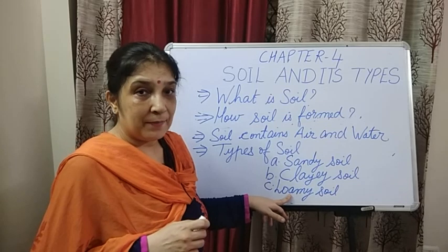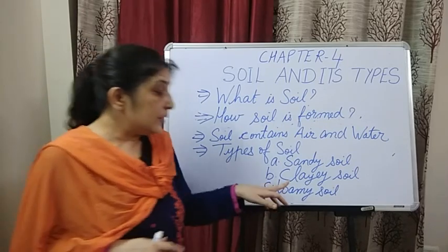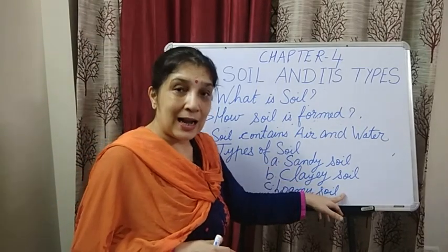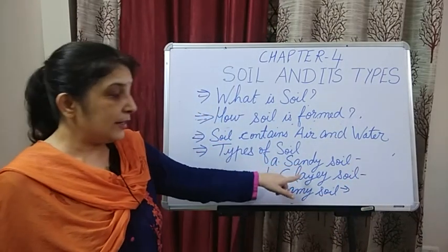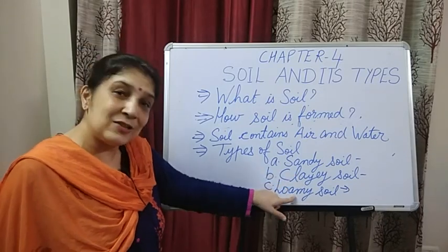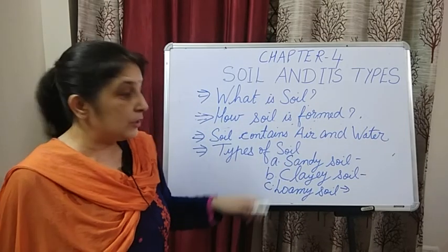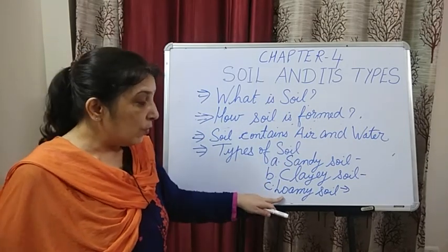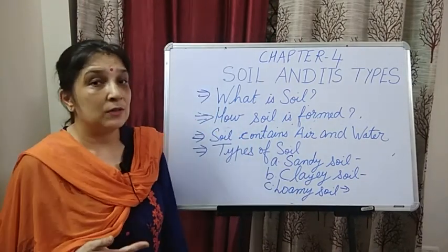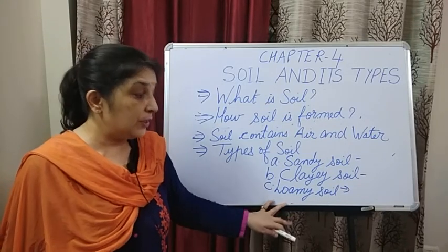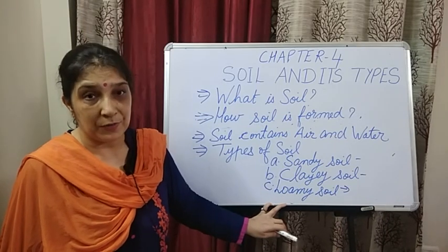Loamy soil is very good for plants to grow. It is a mixture of sandy soil and clay soil — having a combination of both. Loamy soil is very fertile, meaning it is good for plant growth, and farmers use loamy soil for growing plants.